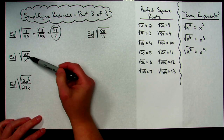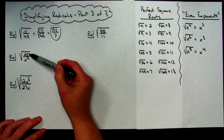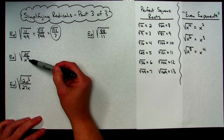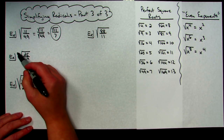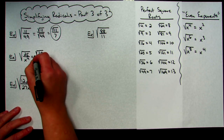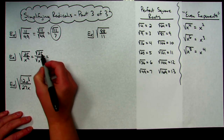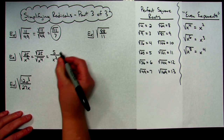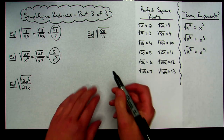Second example: square root of 25 over x to the fourth, all under one radical. Square root of 25 is a perfect square, and x to the fourth has an even exponent, so it's also a perfect square. I break it into two radicals: square root of 25 on top and square root of x to the fourth on the bottom. Square root of 25 is 5, and square root of x to the fourth is x squared. Answer: 5 over x squared.